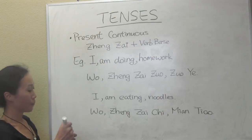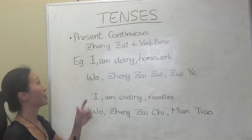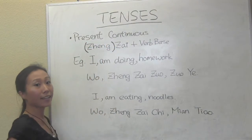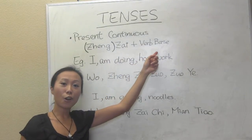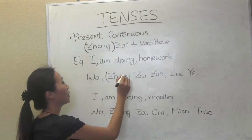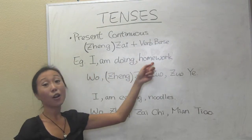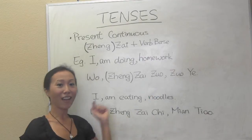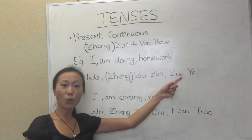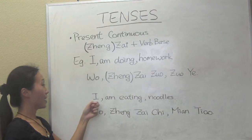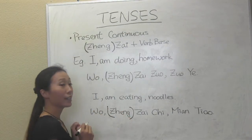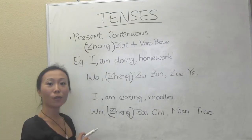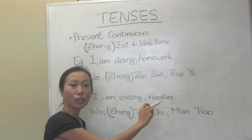Usually when we say the present continuous tense, we shorten 正在 to just 在, so we use 在 plus the verb base. For example, 'I am doing homework' can be said as 我在做作业 — we omit the 正. Same for 'I am eating noodles': 我在吃面条.